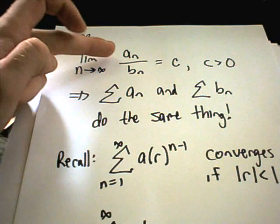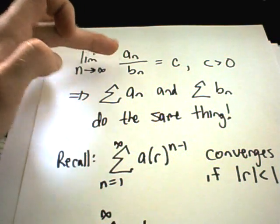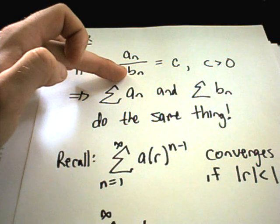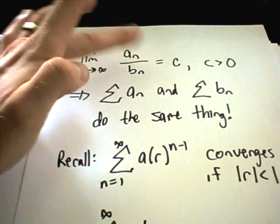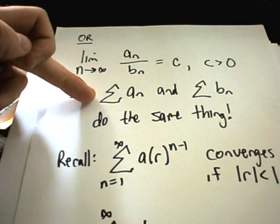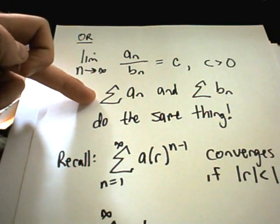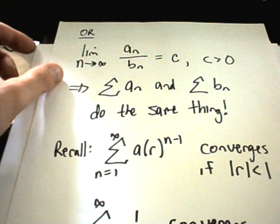The idea is you're going to start with an original series. You'll pick out a series that you know either converges or diverges, and then take the limit of that. Then you'll know the original series must converge or must diverge if you get this finite number out.